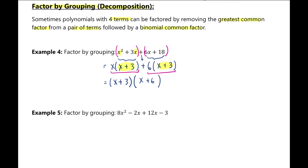So we have x and 6 here, and we have the common factor x plus 3. The factored form is (x + 3)(x + 6).